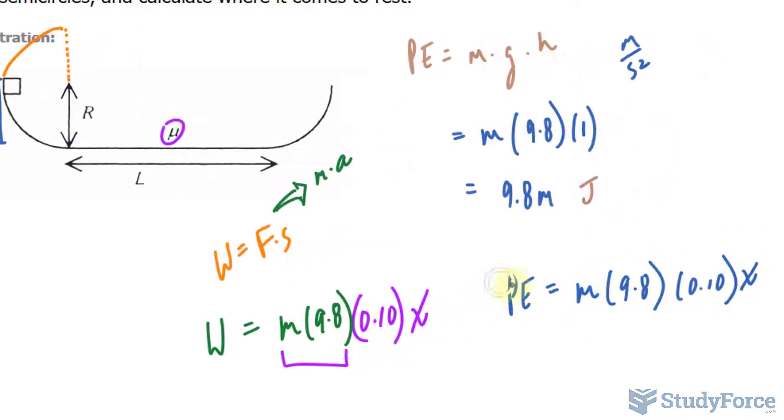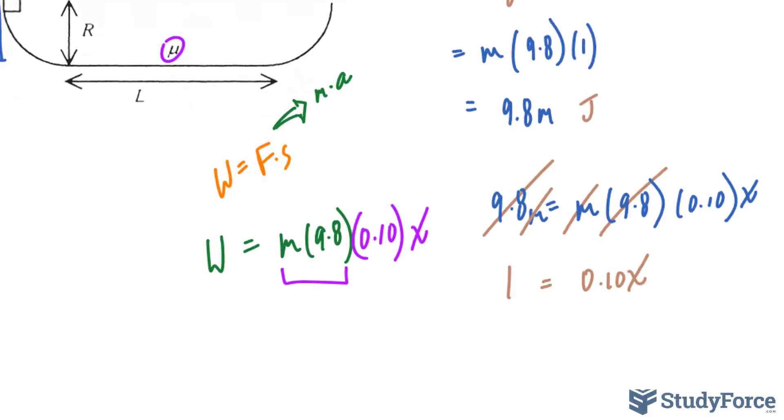And let me replace PE with the expression we found earlier. Now, what we are looking for is x. And from here, we can start to cancel things out. 9.8 and 9.8 cancel. M and M cancel. This leaves us with 1 on the left side and 0.10x on the right side. Dividing both sides by 0.10 to isolate for x, we end up with 10 is equal to x, or 10 meters.